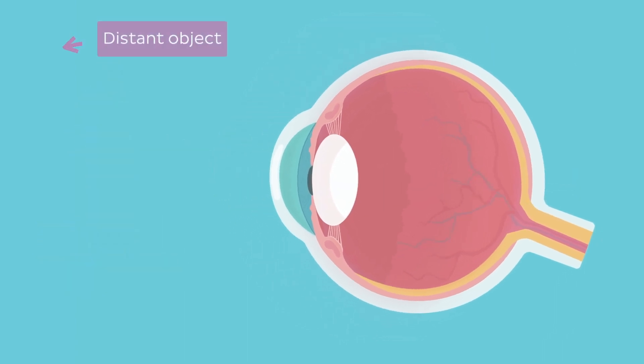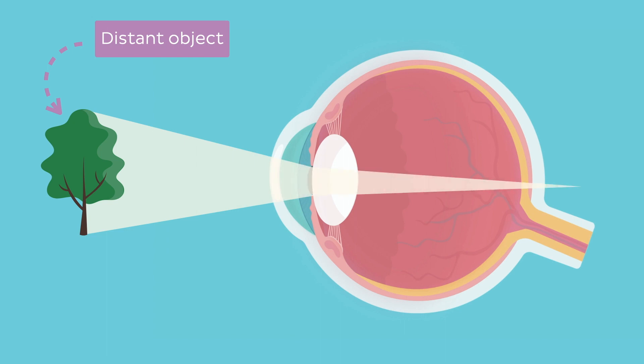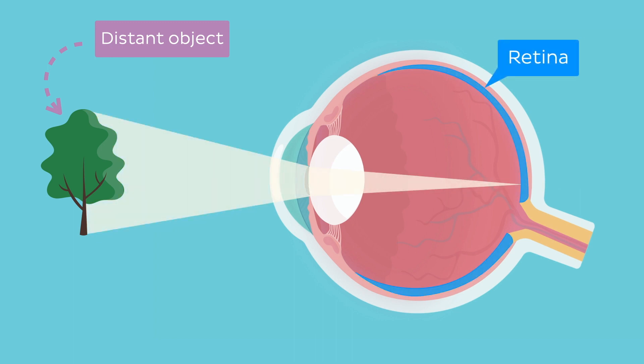When looking at a distant object, this can be compensated to an extent by contracting the ciliary body. As we already explained, this makes the lens more spherical, thus increasing its refractive power, which in turn redirects the focal point to the retina.